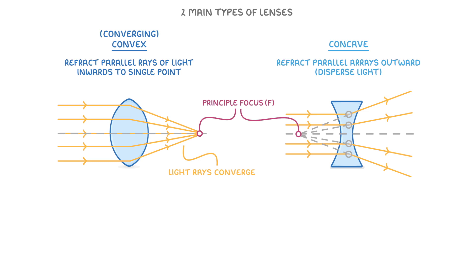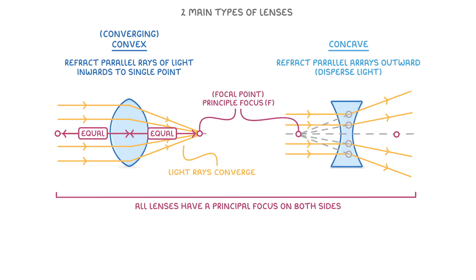Now regardless of what type of lens it is, all lenses have a principal focus on both sides, and they'll be equal distances from the centre. So our convex lens would also have a principal focus over here, and the concave lens would also have one here. You might sometimes hear the principal focus being called the focal point, but they're both exactly the same thing.